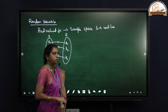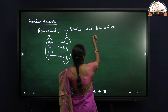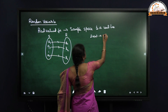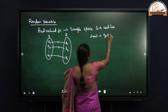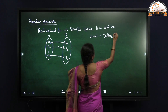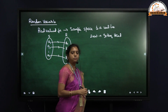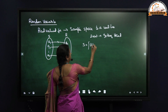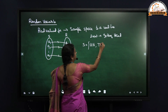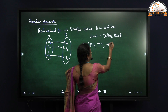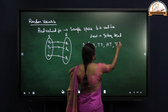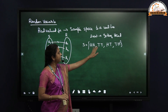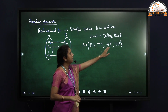For example, if I am tossing two coins and I am considering the event as getting heads, first we will write down what is the sample space. The sample space will be: two heads, two tails, head-tail, or tail-head.